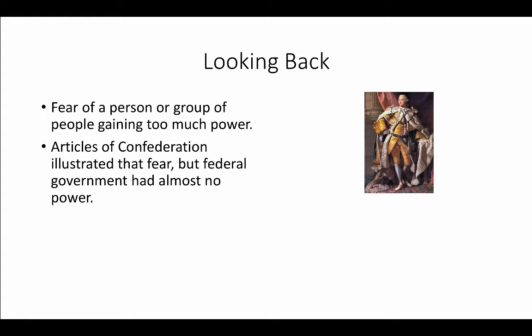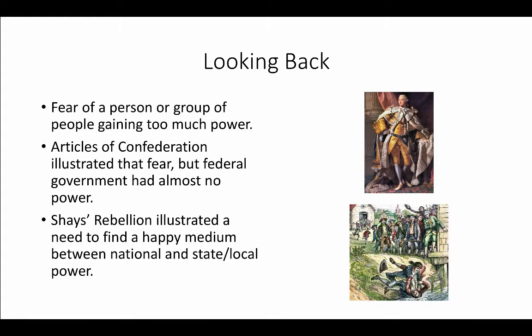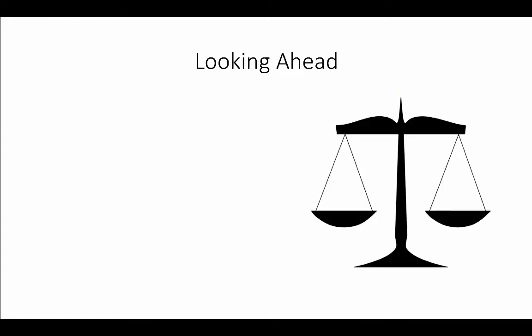The downfall of the Articles of Confederation really comes with Shays' Rebellion. Essentially under the Articles, they could not collect federal taxes, and it's really tough to pay an army to put down a rebellion if you can't even pay them. Very quickly after the new country is created, they find out that maybe they went a little too far away from that centralized power, and in order for people to listen to you, you do have to have a little bit of power in the national government.